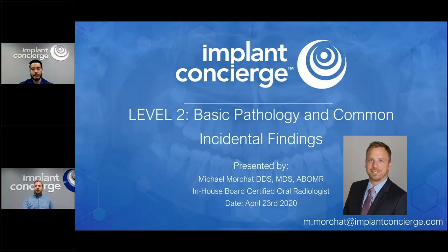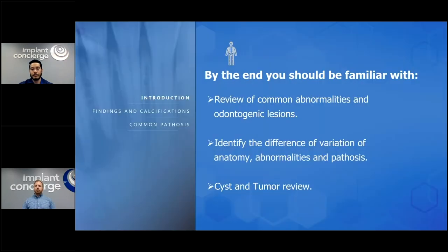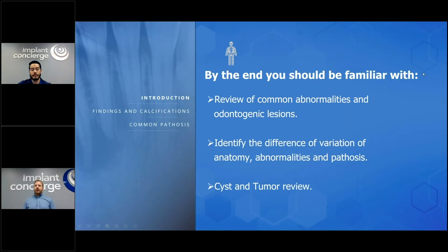I hope we all have a good idea of the common incidental findings you're going to see in a cone beam volume when you navigate it. A variation of anatomy is something that will look basically normal but might be bilateral, versus an abnormality which is something different you'll note in the back of your mind. As we progress through our description, impression, and differential, we'll find out if it's an abnormality to be concerned with or pathosis that requires action.